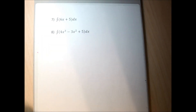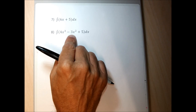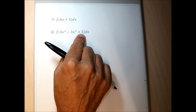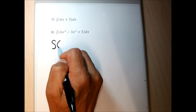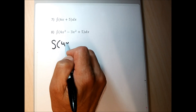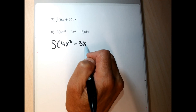If you have a sum or a difference within an integral — adding or subtracting — you can take the integral of each term separately. So for a problem like the integral of 4x cubed minus 3x squared plus 5 dx, I'm going to integrate 4x cubed, integrate minus 3x squared, and integrate plus 5, rewriting 5 as 5x to the zero.